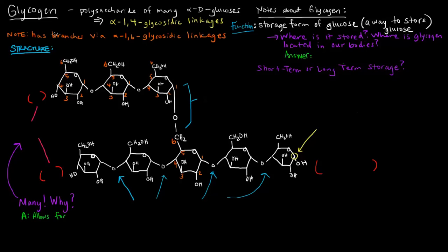In this video, I want to talk a little bit about glycogen — its structure, its function, why we care about it, what's important about it, things to know. So glycogen, as we mentioned before when we talked about carbohydrates, is a polysaccharide of many alpha-D glucoses — specifically a polysaccharide of alpha-D glucose linked by alpha-1,4 glycosidic linkages.